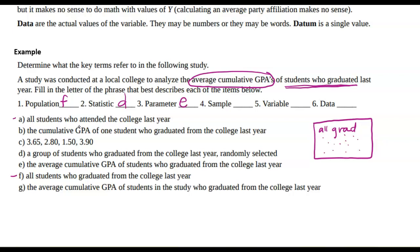However, I'm going to use this sample that I collected in order to maybe make a generalization about that population. So G, the average cumulative GPA of students in the study who graduated from college last year. I am interested in collecting the cumulative GPA. And the actual data that I would collect would be those GPA values.